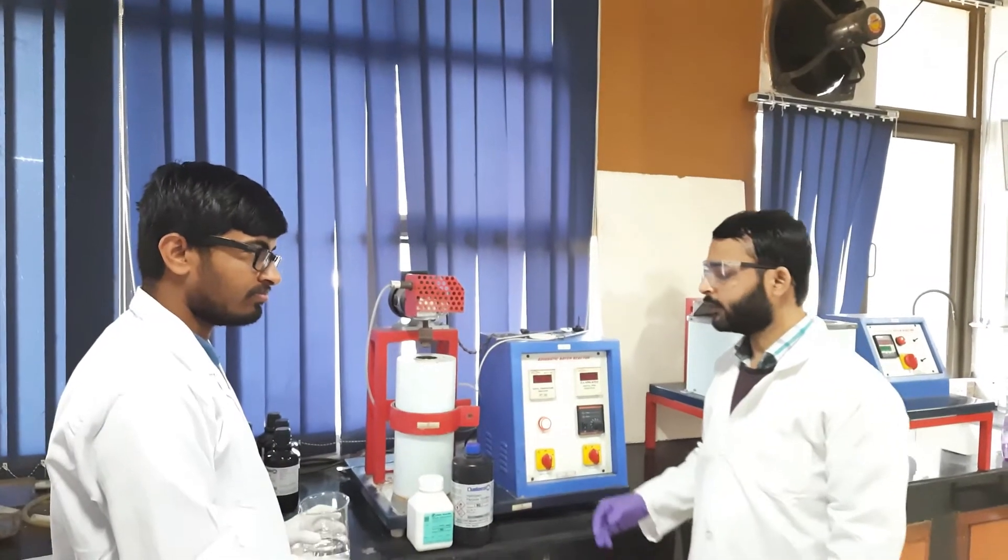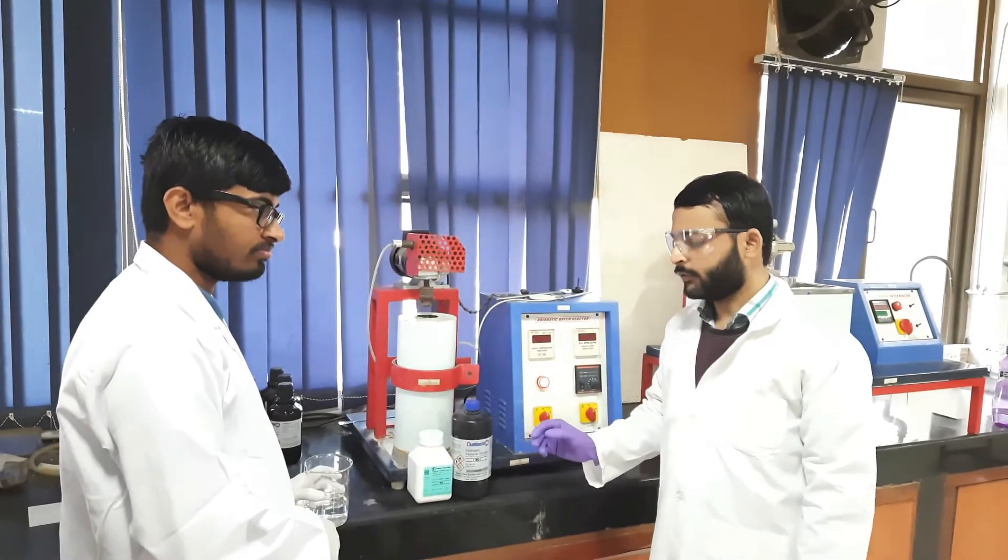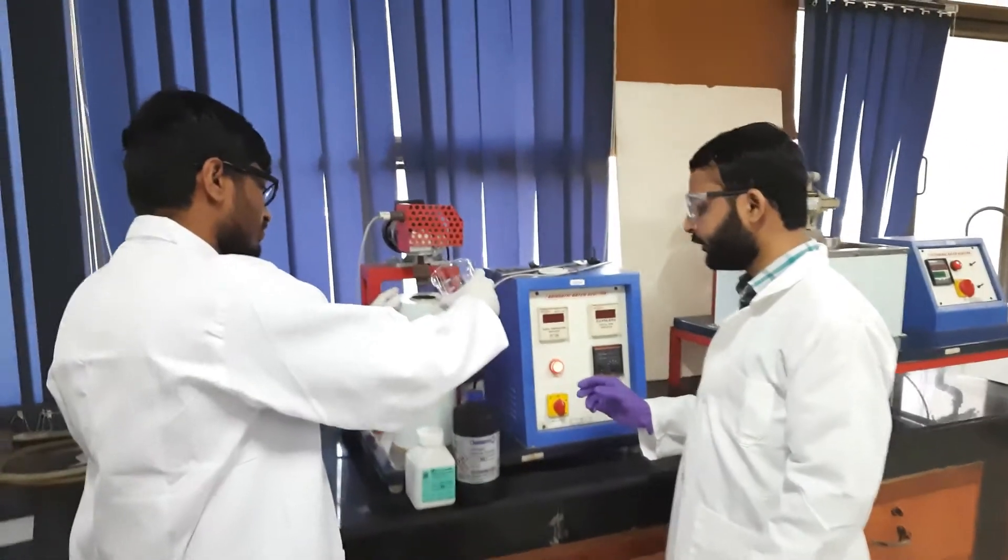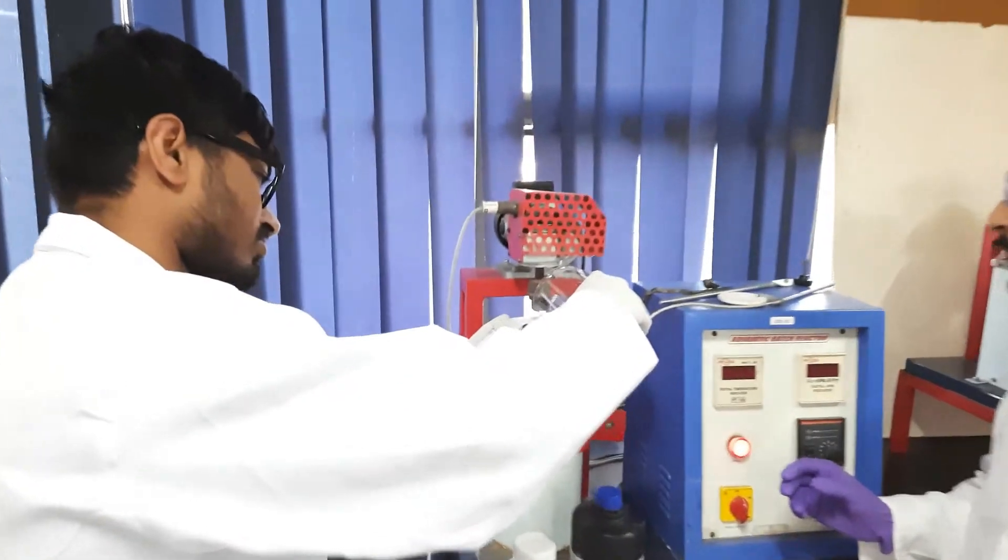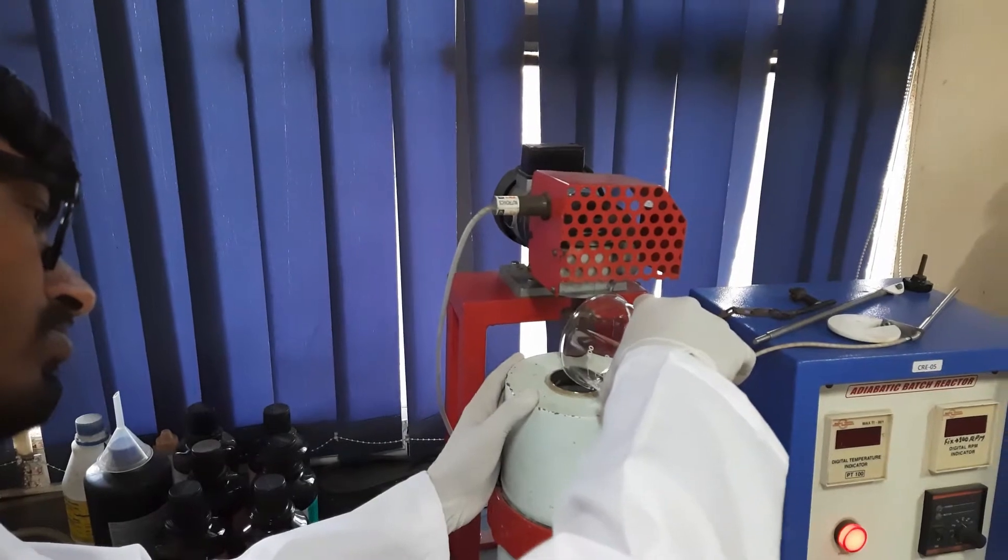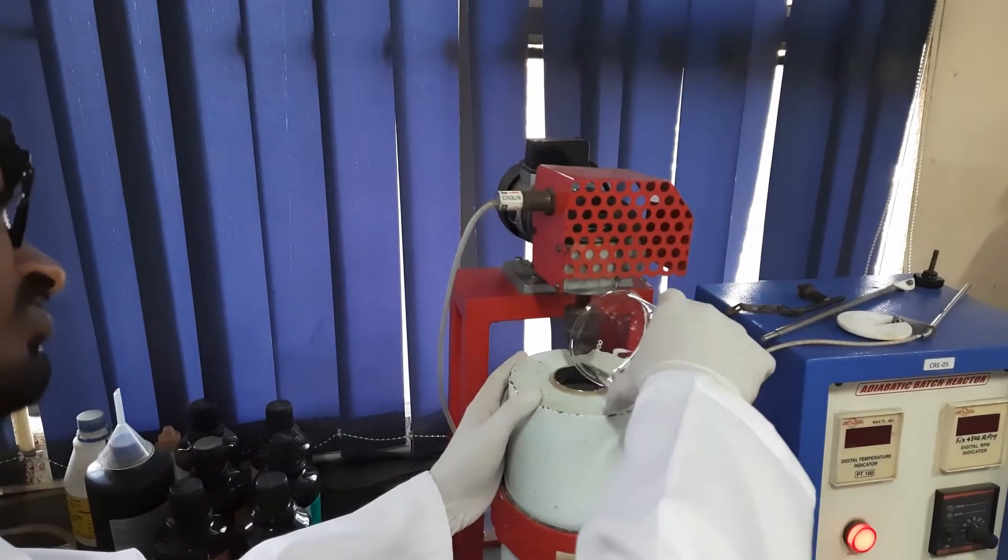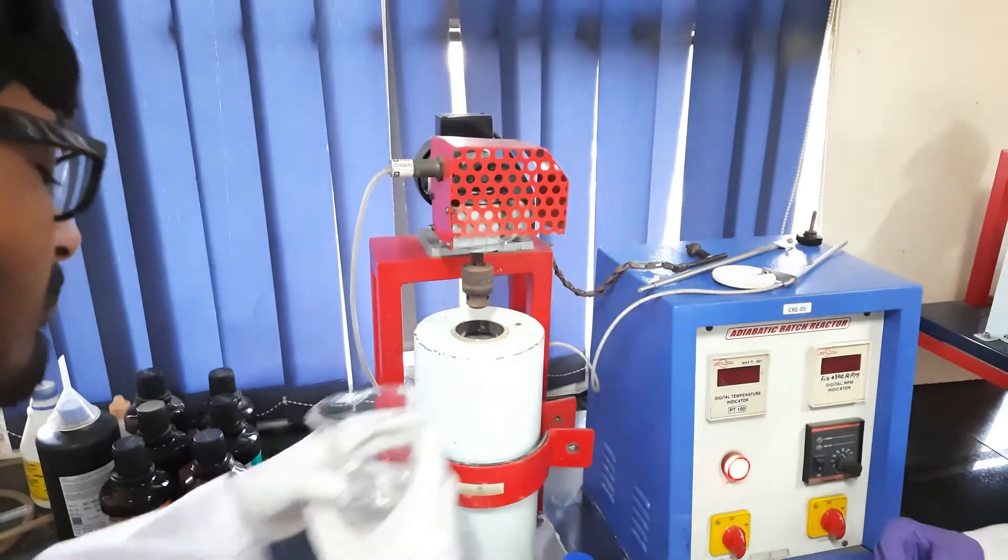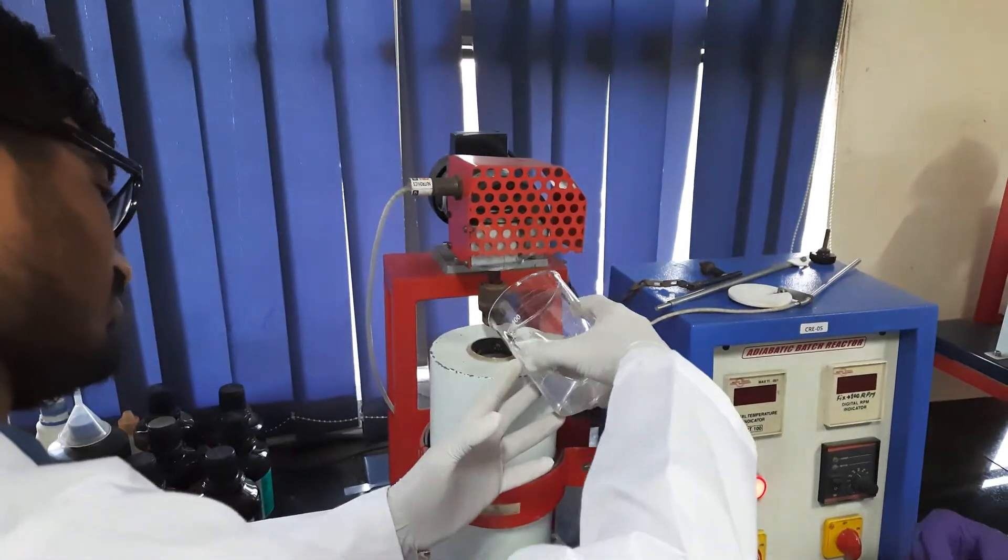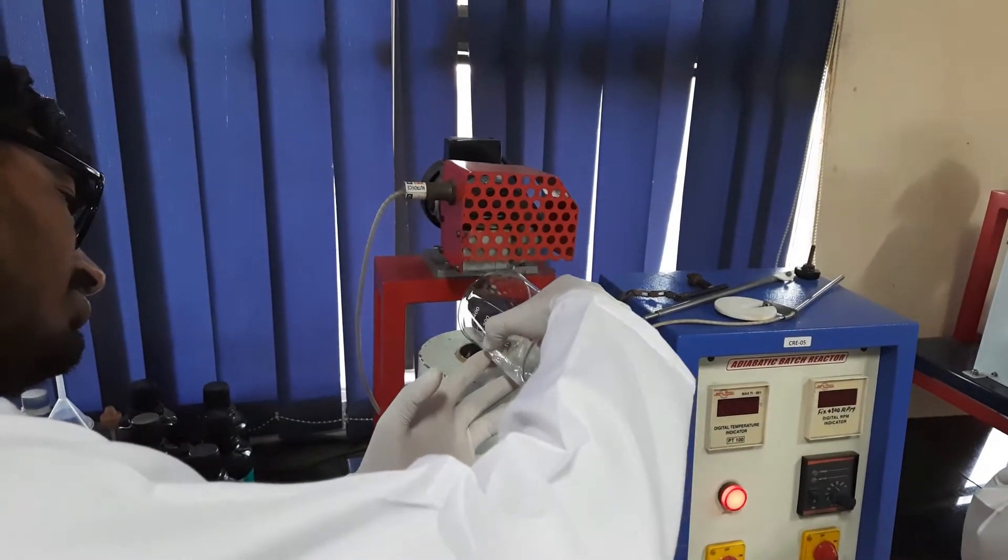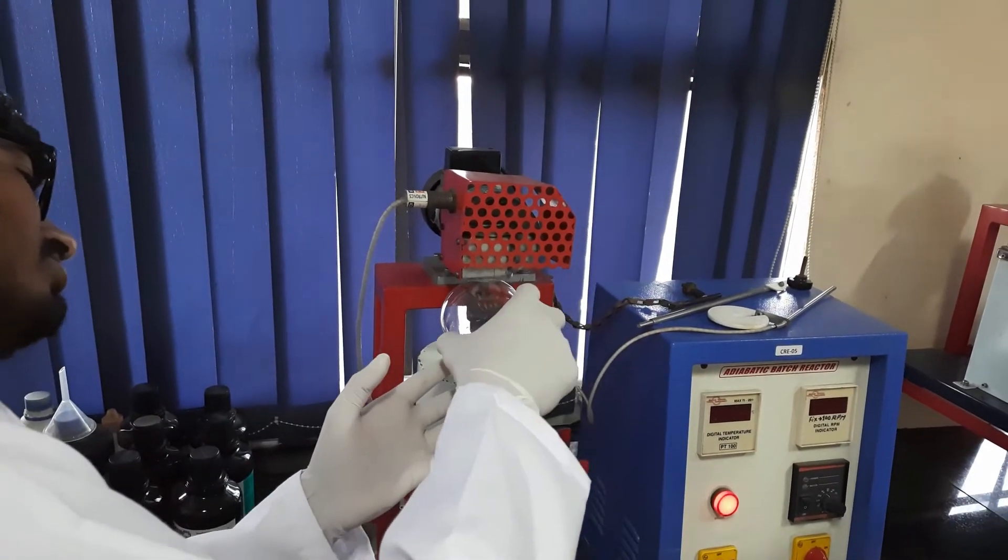Now that we have prepared the reactants, we will add the reactant solutions in the batch reactor. First we will add the sodium thiosulphate solution in the batch reactor and then we will add the hydrogen peroxide solution also in the batch reactor and we will close the reaction vessel after adding both these reactants.